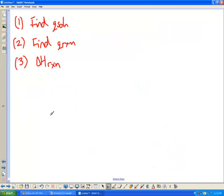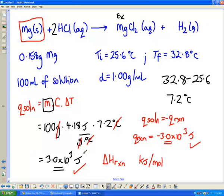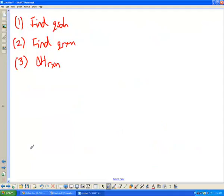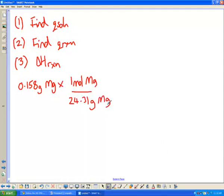So the first thing we need is to find the number of moles of magnesium. We said on the last slide we had 0.158 grams of magnesium. We're going to convert that into moles by knowing that one mole of magnesium weighs 24.31 grams of magnesium. That just comes directly from the periodic table, giving us 0.0065 moles of magnesium or 6.5 times 10 to the minus 3 moles of Mg.